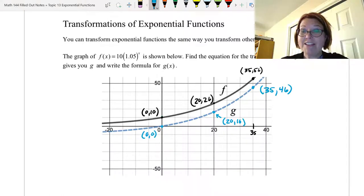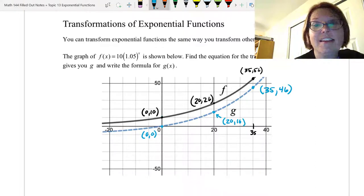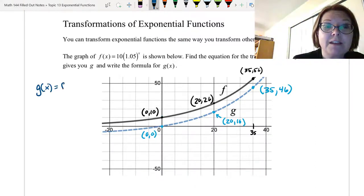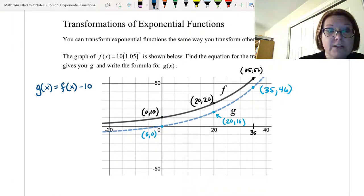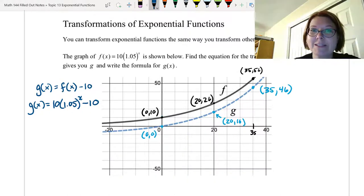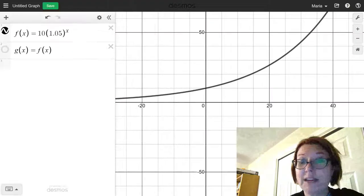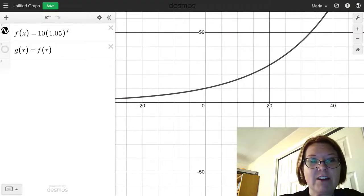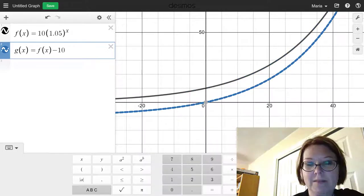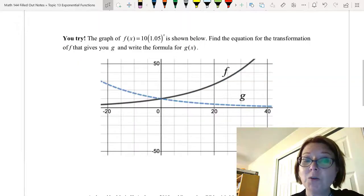So it seems like the graph of g is simply the graph of f moved down by 10 and that would be g of x equals f of x and then minus 10 on the outside of f of x. Another way to write that would be g of x equals 10 times 1.05 to the x minus 10 on the outside. Let's go over to Desmos and just double check that one. So here we have the graph of f of x. I've got a graph of g of x which is just equal to f of x and now I'm going to subtract 10 from it and there we go we've got the graph that we want.